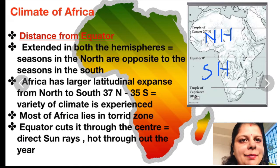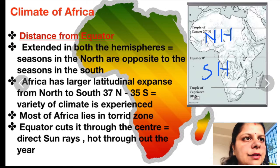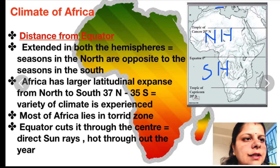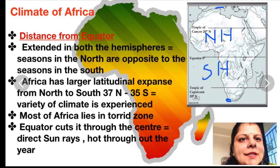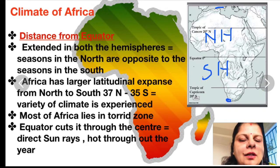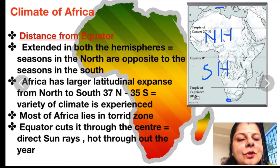Africa has a larger latitudinal expanse from north to south. Looking at the African map, in the north it starts from 37 degrees north and ends near Cape Town at about 35 degrees south. Because of this, Africa experiences a variety of climates. Central regions experience a different kind of climate, and as you move towards the north and south, the climate changes. Coastal regions have a mild climate.